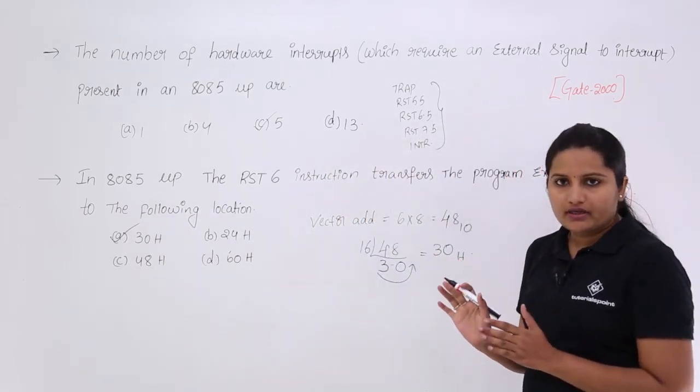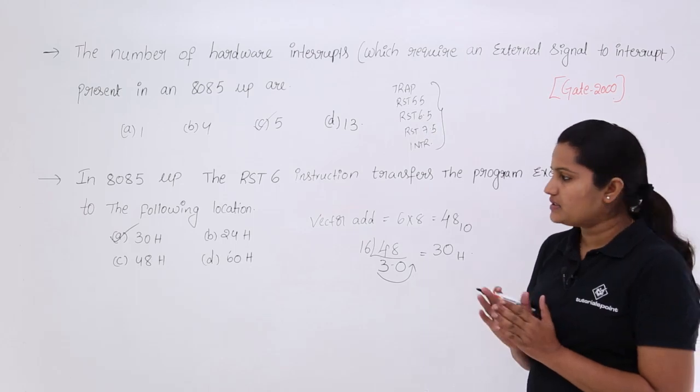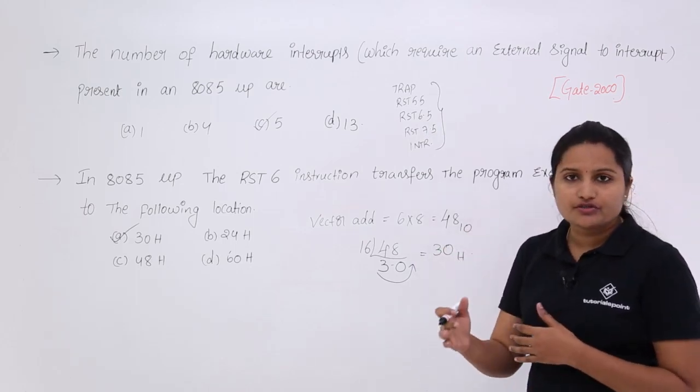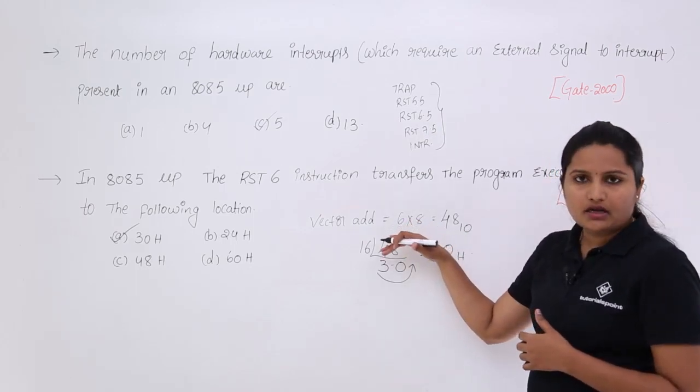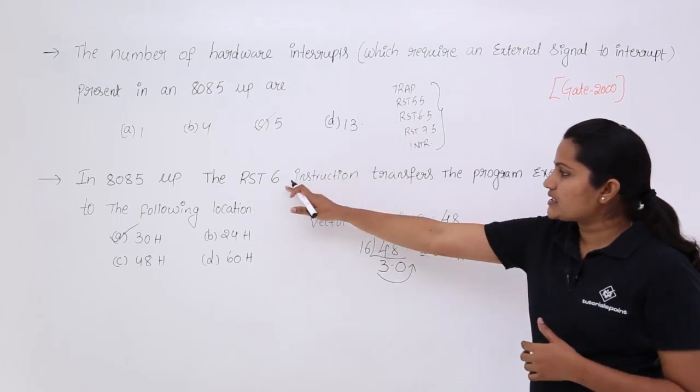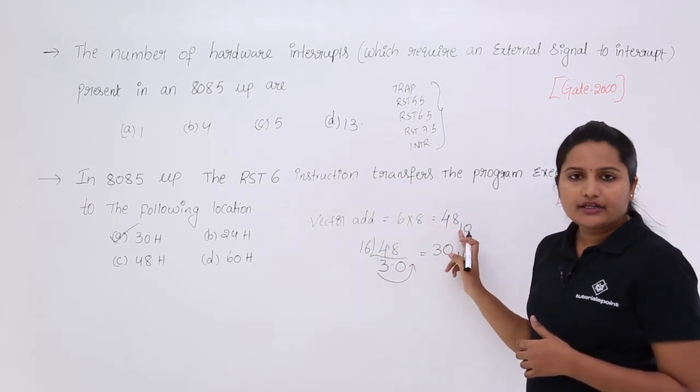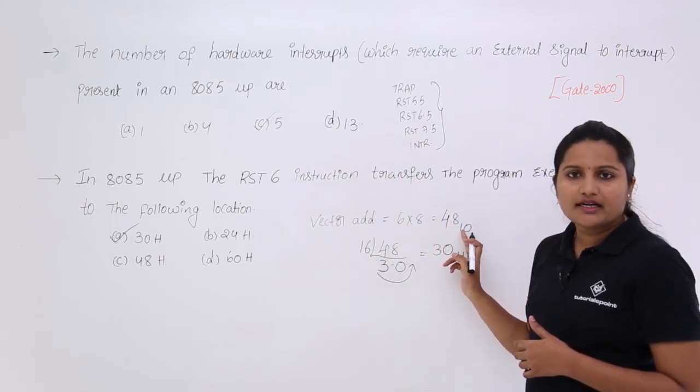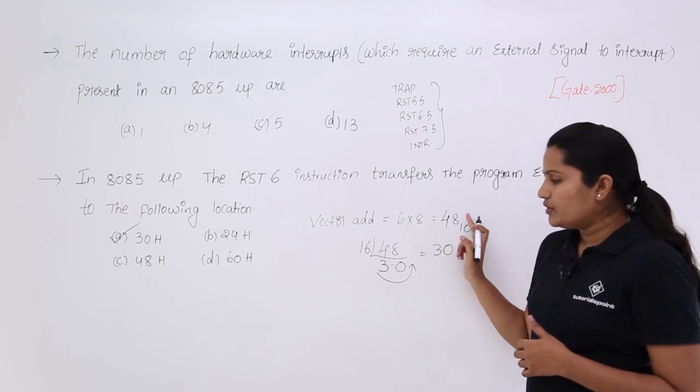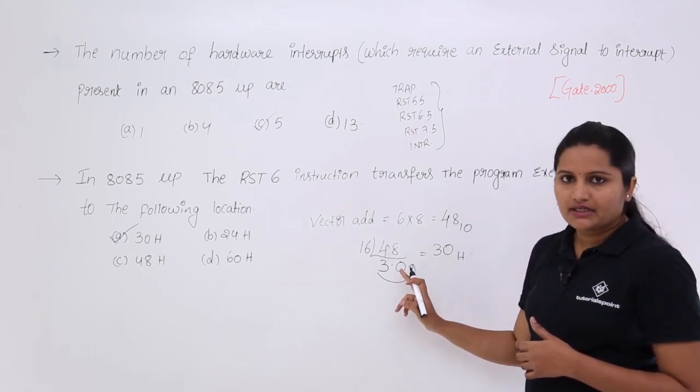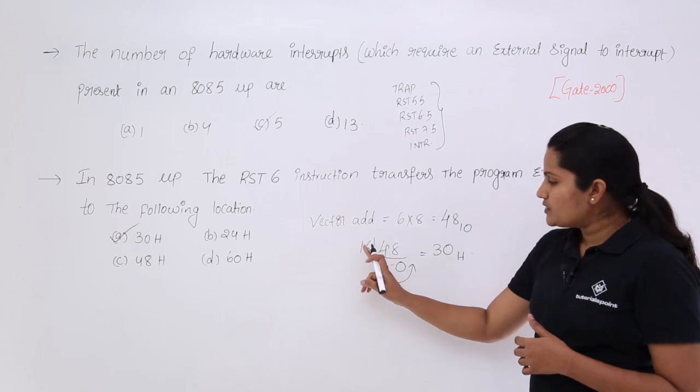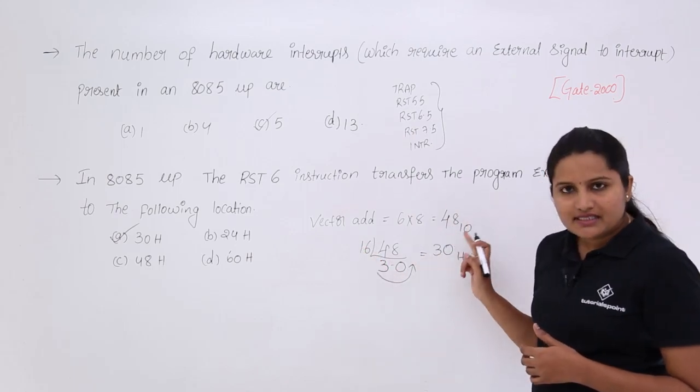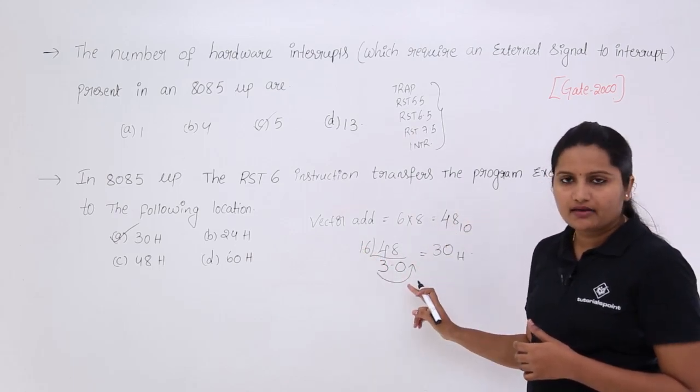When you are given to find out the vector address or which location you are going to skip you need to use this formula. Instruction number into 8 then you are getting your decimal equivalent location. Now you need to convert the decimal equivalent to hexadecimal. Here by converting this decimal address to hexadecimal equivalent.